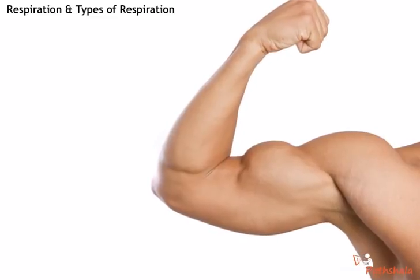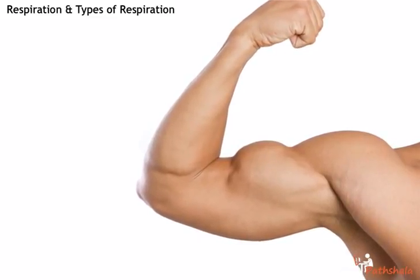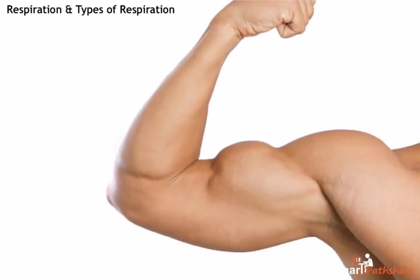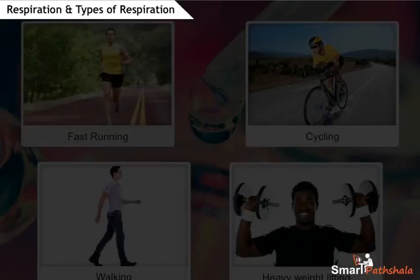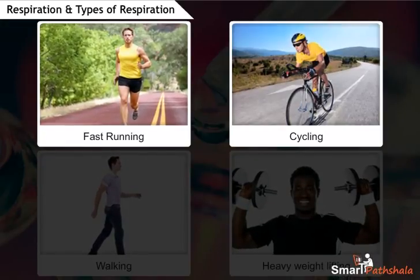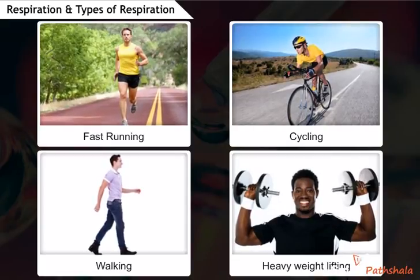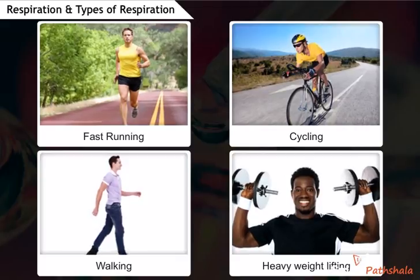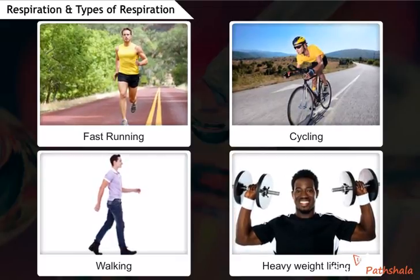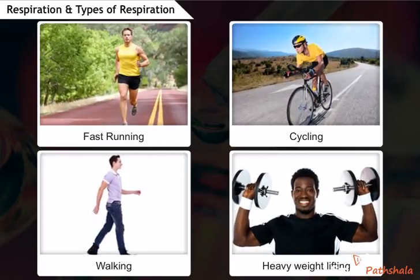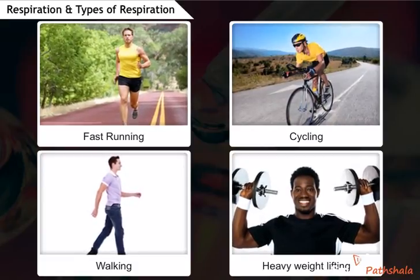Sometimes, anaerobic respiration takes place in our muscle cells when there is a temporary deficiency of oxygen. During heavy exercise like fast running, cycling, walking for many hours, or heavy weight lifting, the demand for energy is high but the supply of oxygen is limited. Then, anaerobic respiration takes place in the muscle cells to fulfill the demand for energy.